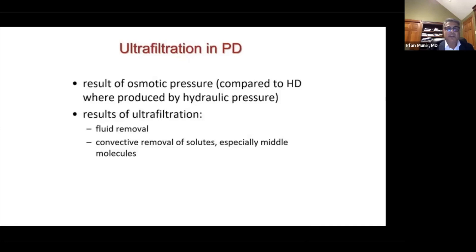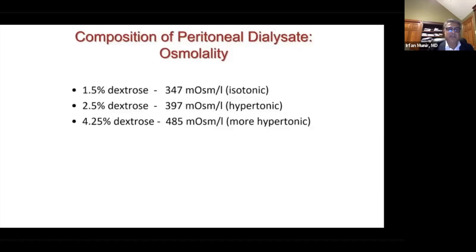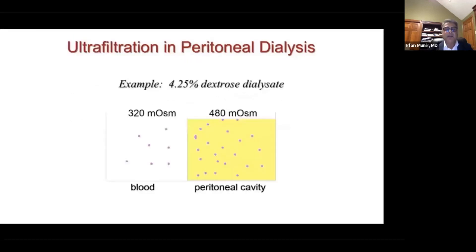The dialysate mostly used in clinical practice is dextrose-based, which has a high concentration of glucose compared to plasma. 1.5% dextrose has an osmolality of 347 mOsm/L, 2.5% dextrose has an osmolality of 397 mOsm/L, and 4.25% dextrose has an osmolality of 485 mOsm/L. This is how ultrafiltration takes place in peritoneal dialysis.